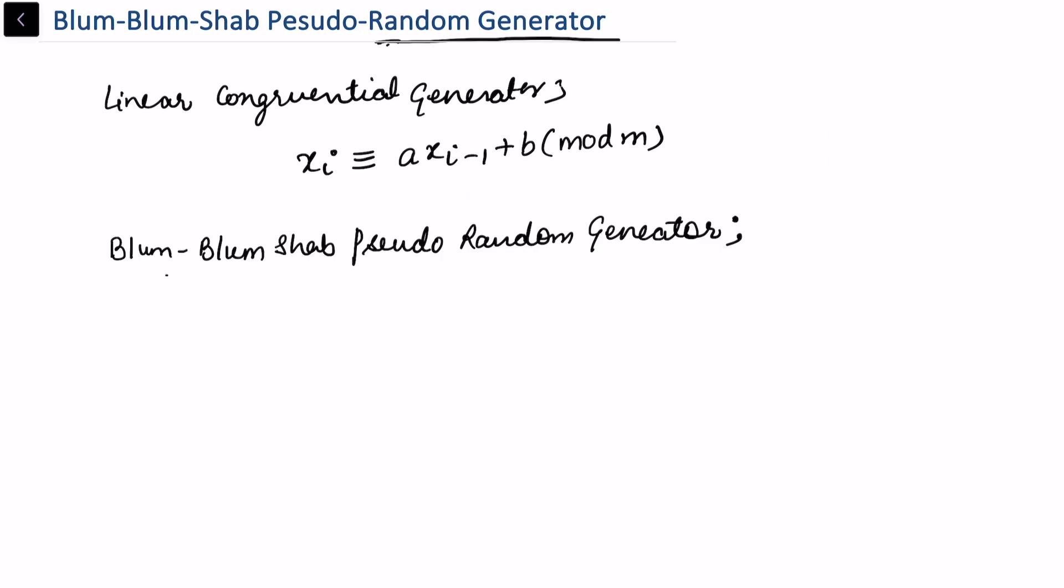one. Now in Blum-Blum-Shab's pseudo-random generator we use a non-linear congruence and we use this congruence: xi congruent to xi minus one square mod n. And as you can see that here the degree is two,